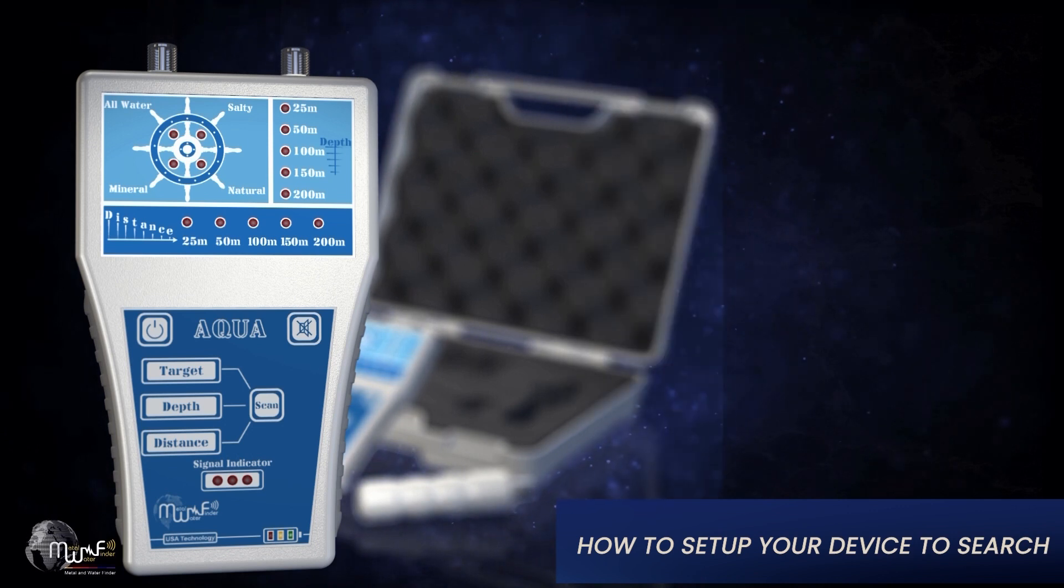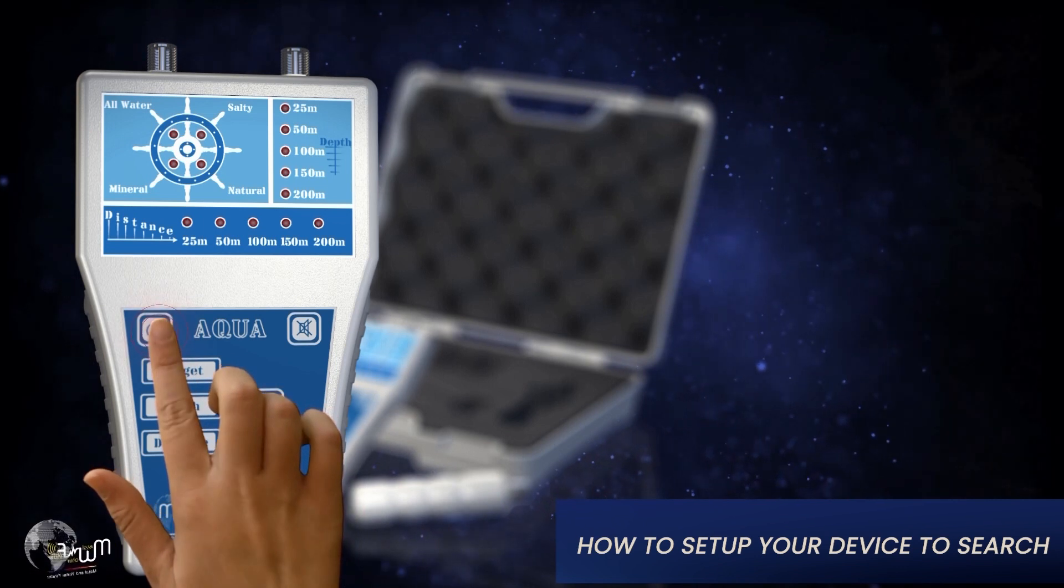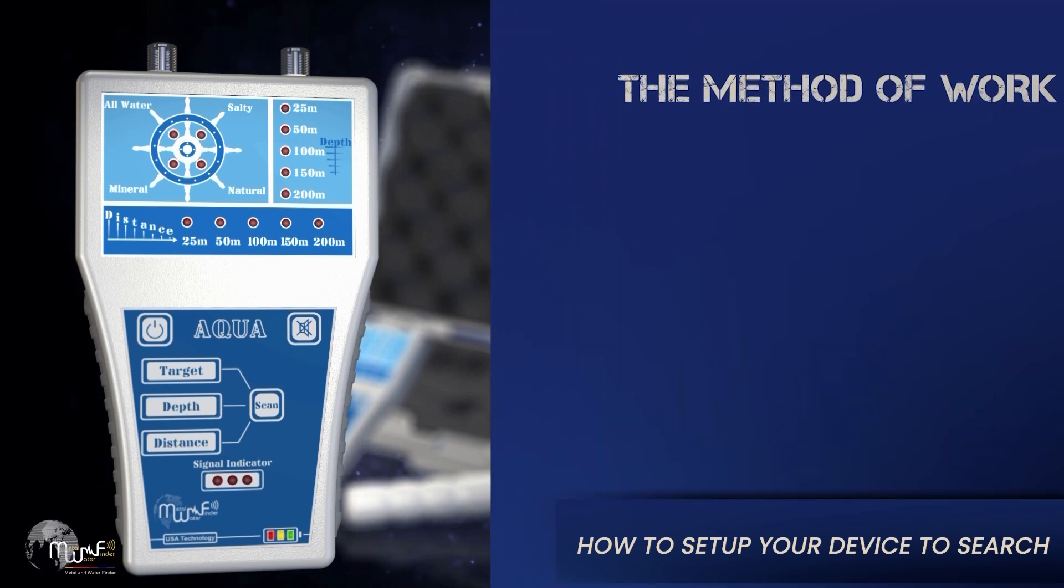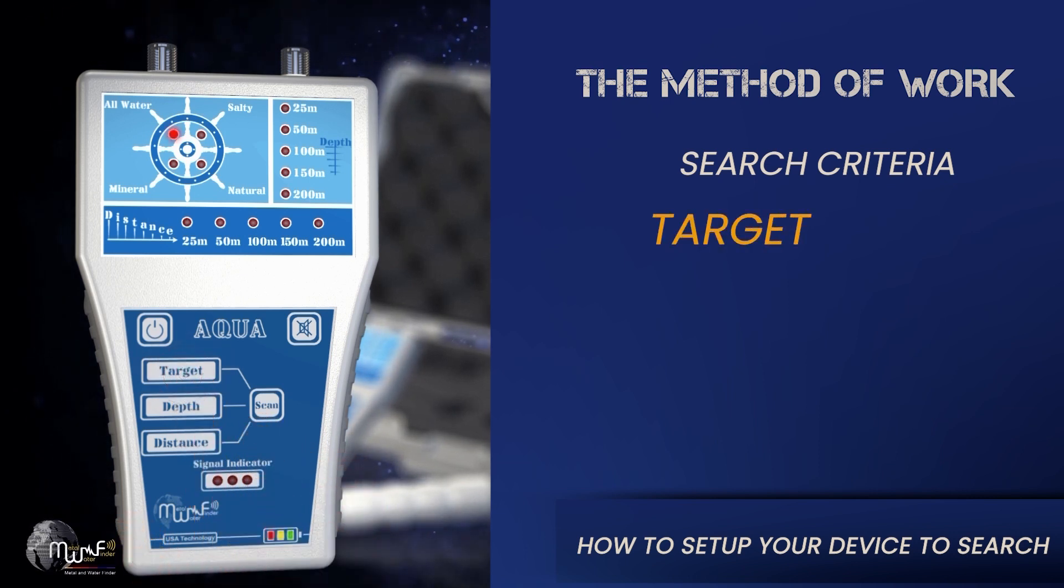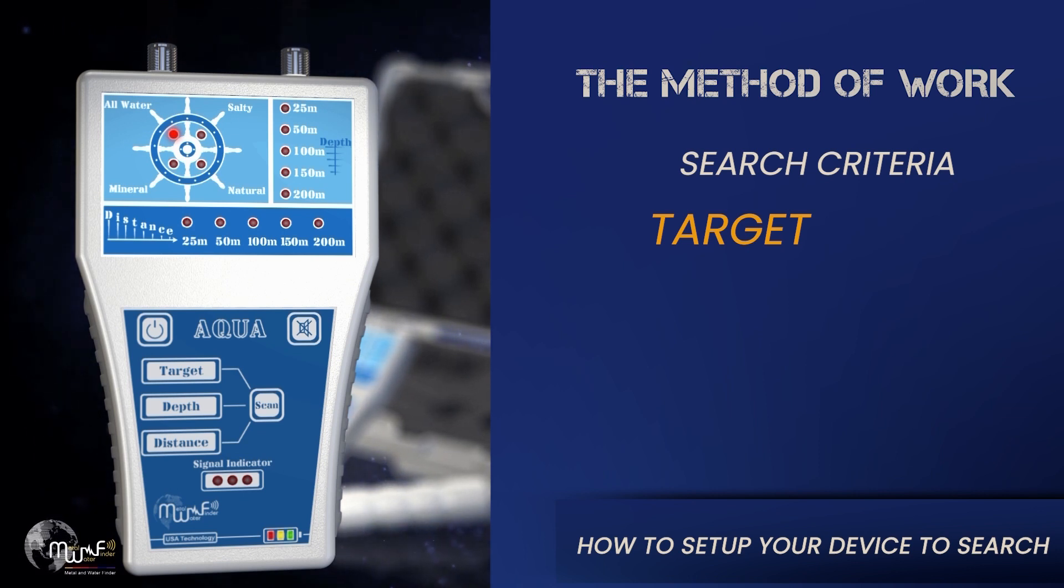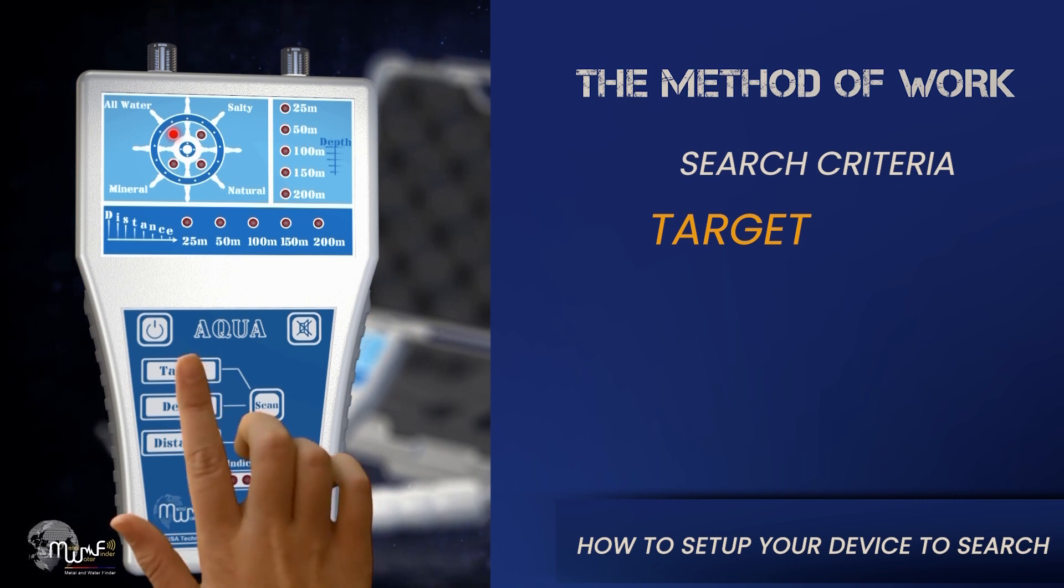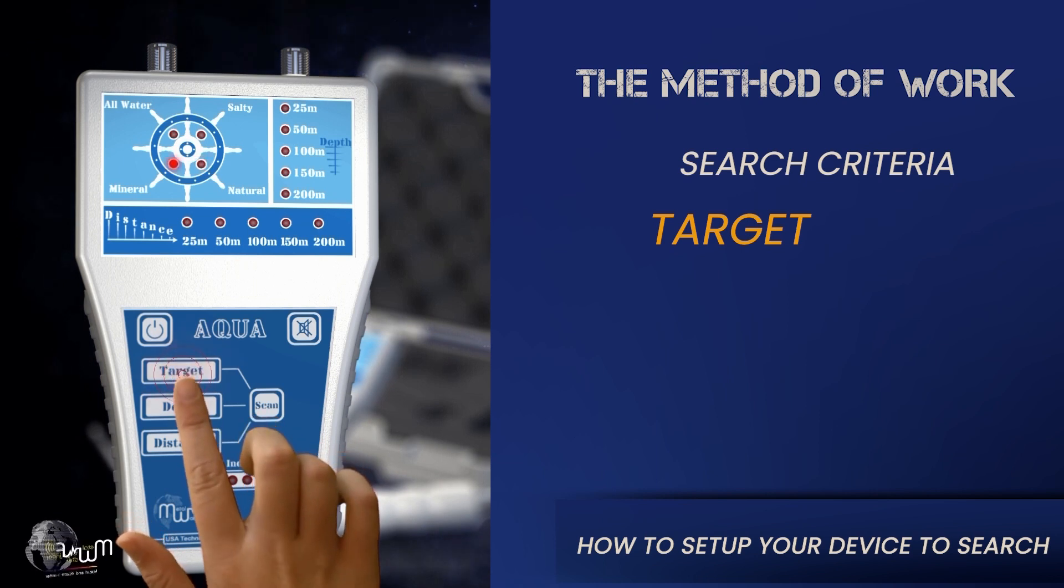How to set up your device to search. Turn the device on with the power key. First, select the type of water to be searched for by pressing the target button and you will notice the change in the optical indicators of the target interface section at the top of the device. Each type of water has its own light. The objectives are: all kinds of water, salty water, mineral water, and natural water.